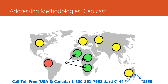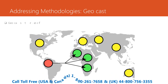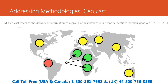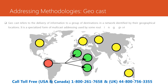The fifth addressing methodology is geocast. Geocast refers to the delivery of information to a group of destinations in a network identified by their geographical locations. It is a specialized form of multicast addressing used to deliver information to nodes identified by their geographic location.